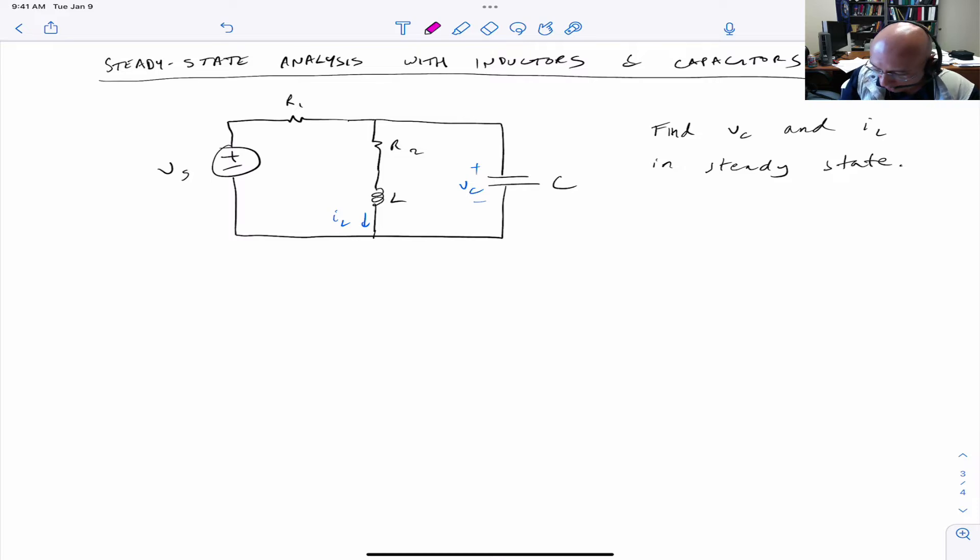The principles for this process are as follows. One, sketch the steady-state circuit. It's simple and straightforward, so you should just do it. Otherwise, you can get confused. And two, solve for the desired circuit parameters.